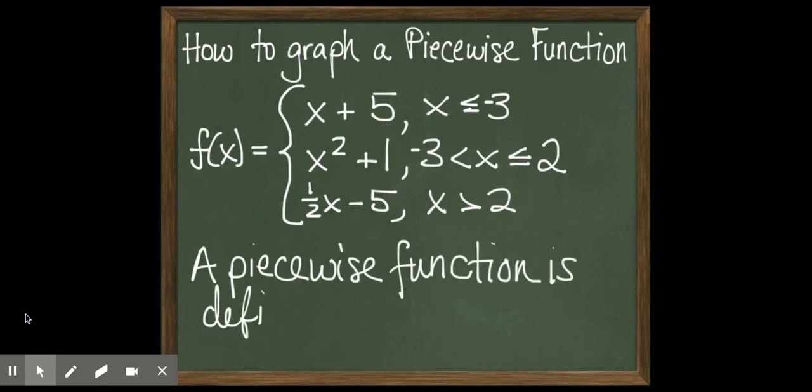Unsurprisingly, a piecewise function is called that because it's defined in pieces. So f of x doesn't just equal one thing, it equals a different thing depending on where you are in the x value. So this function is going to have three pieces from negative 3 and over to the left because it's less than, in between negative 3 and 2, and then finally from 2 off to the right because it's greater than.